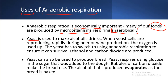For example, yeast is used to make alcoholic drinks. When yeast cells are reproducing rapidly during beer or wine production, the oxygen is used up, and the yeast has to automatically switch to anaerobic respiration to ensure it can survive. In the case of anaerobic respiration, two products are produced: ethanol and carbon dioxide.